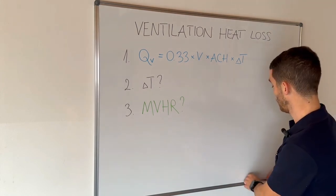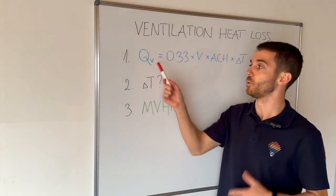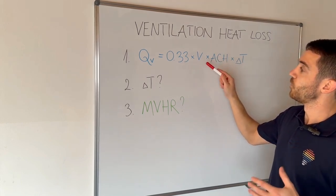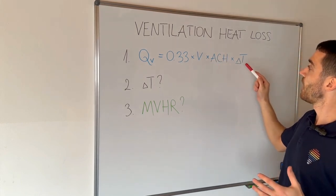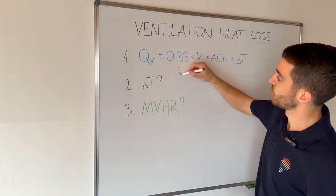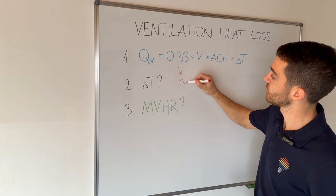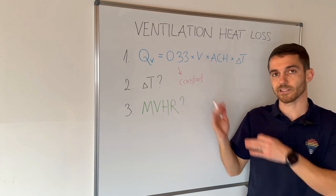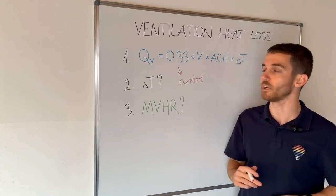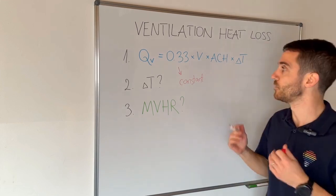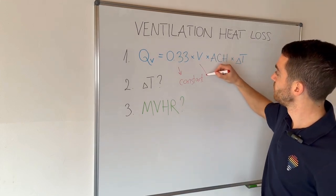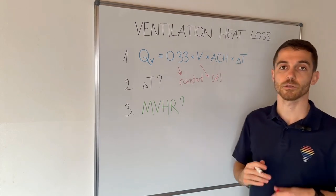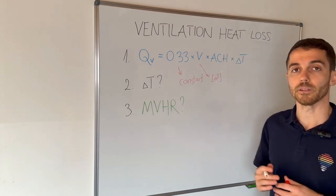Let's start with the formula. Q ventilation equals 0.33 multiplied by volume, multiplied by air changes per hour, multiplied by delta T. The constant 0.33 relates to the density of air with some values calculated inside, but we treat it as a constant in the formula. Volume is our volume in cubic meters — surface area multiplied by height.